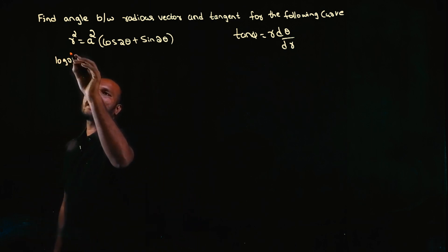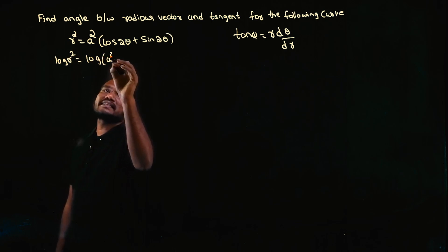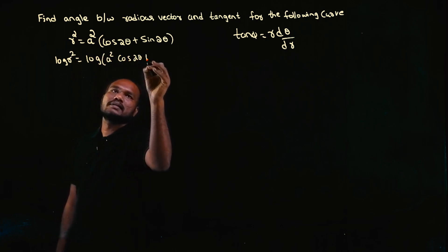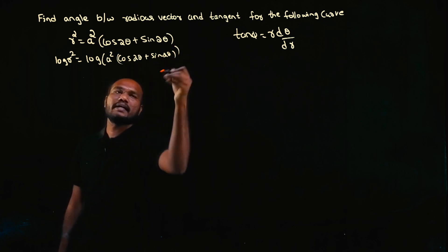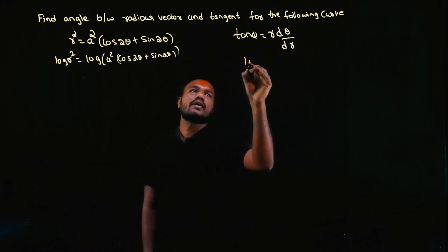So log r² equals log of a² cos2θ plus sin2θ.